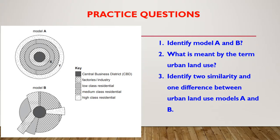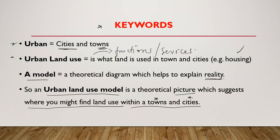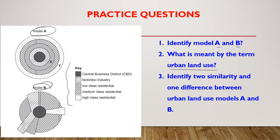Here is an IGCSE exam question. We have model A and model B with a key to interpret them. Identify model A and B: A is the Burgess Concentric Model and B is the Hoyt Sector Model. Urban land use is what the land is used for in towns and cities. Now identify two similarities and one difference between them. One difference: A is in concentric rings while B is in wedges or sectors.